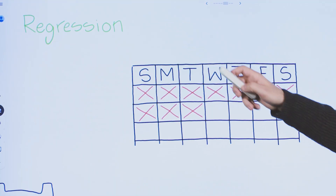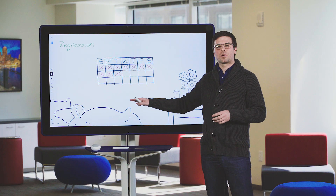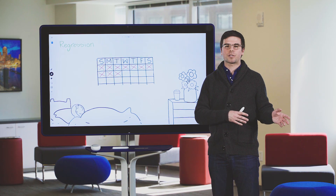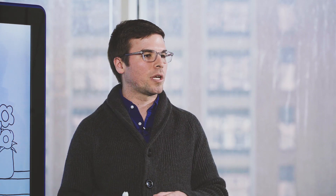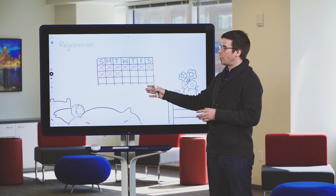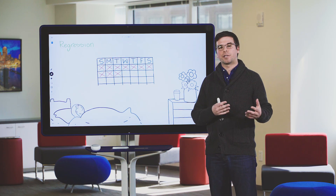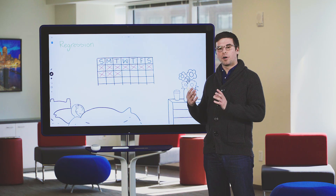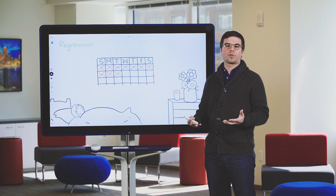Next up is regression. With regression, we're predicting a continuous variable, which is often a numerical value. For a hospital, they would use regression to predict how long a patient is going to remain at the hospital once admitted — whether it's one day versus 14 days or even 30 days. Understanding how long patients are likely to stay helps them plan supplies, staffing, and other resources necessary to care for their patients.